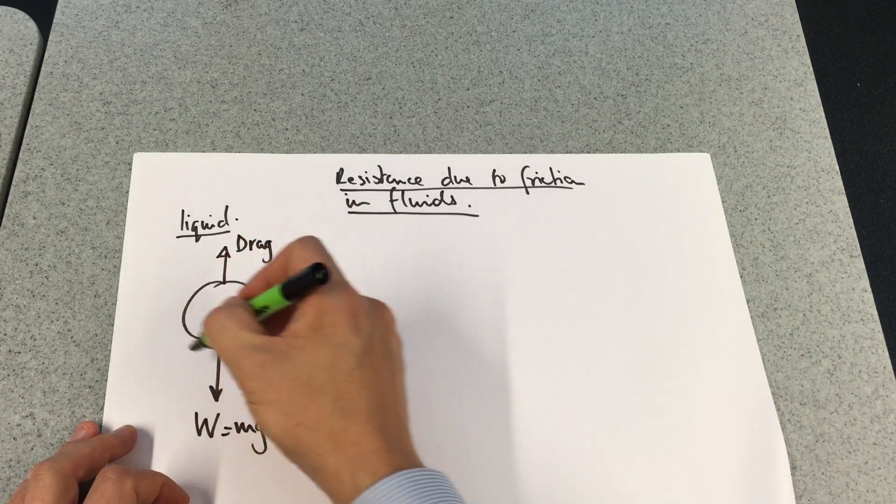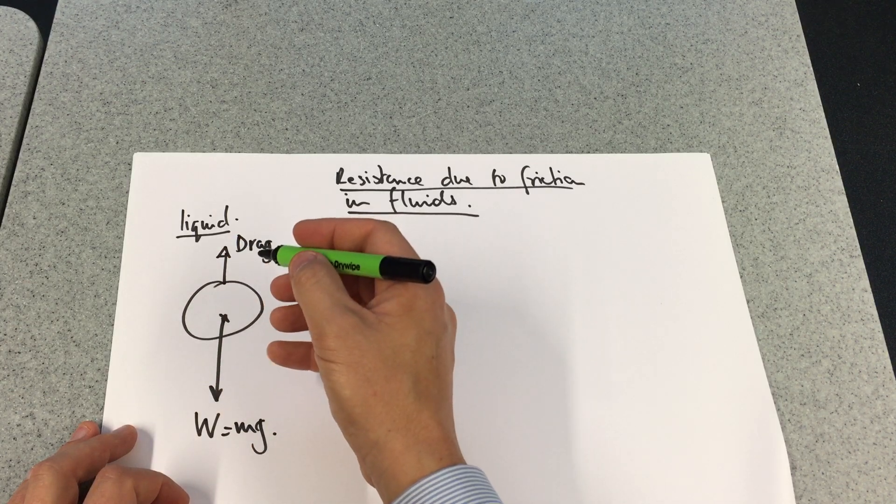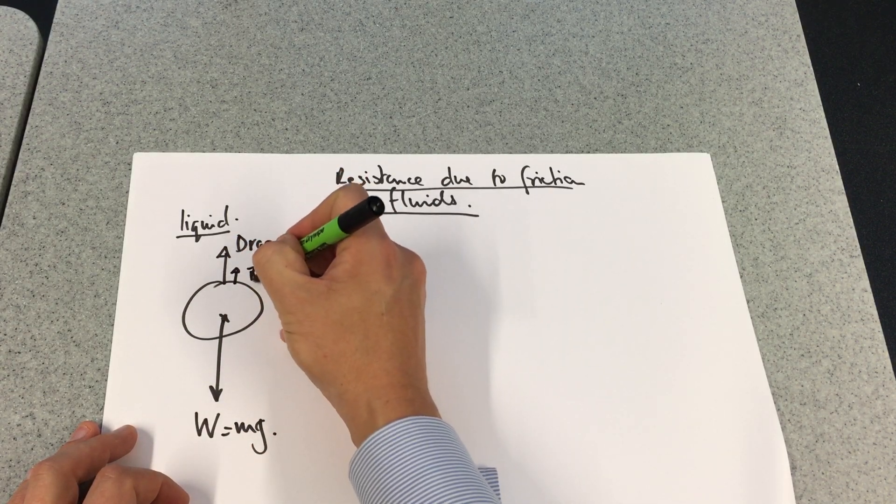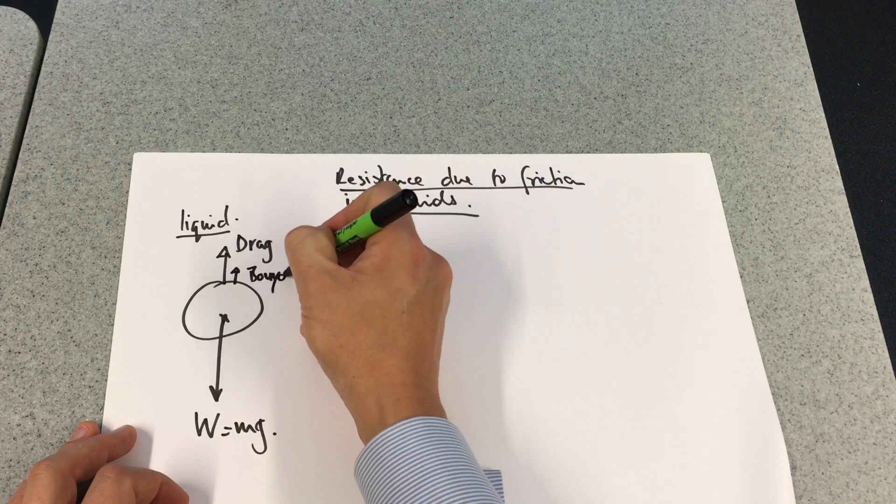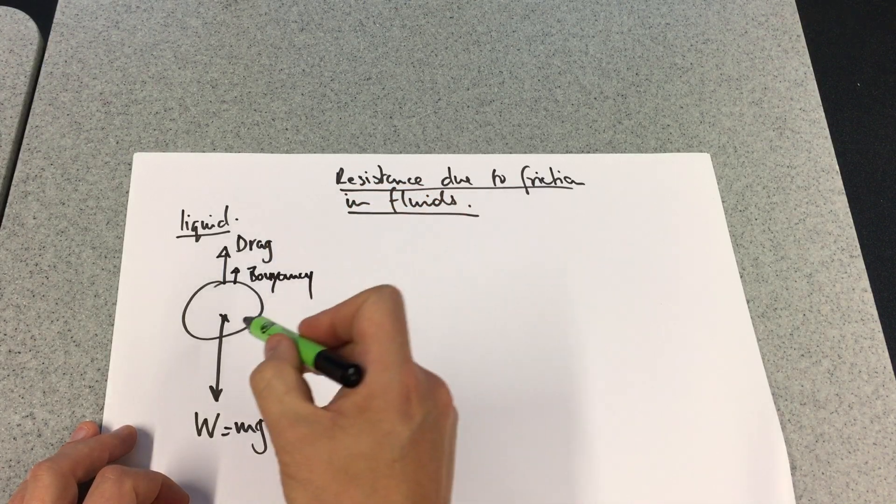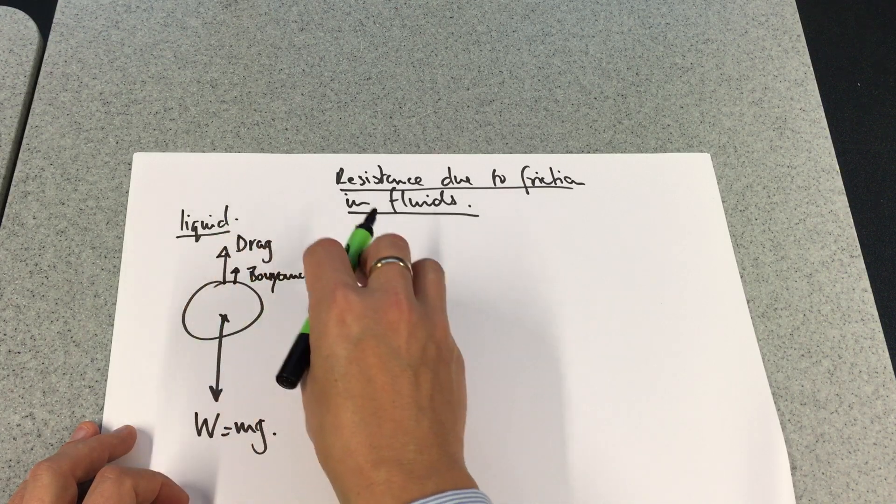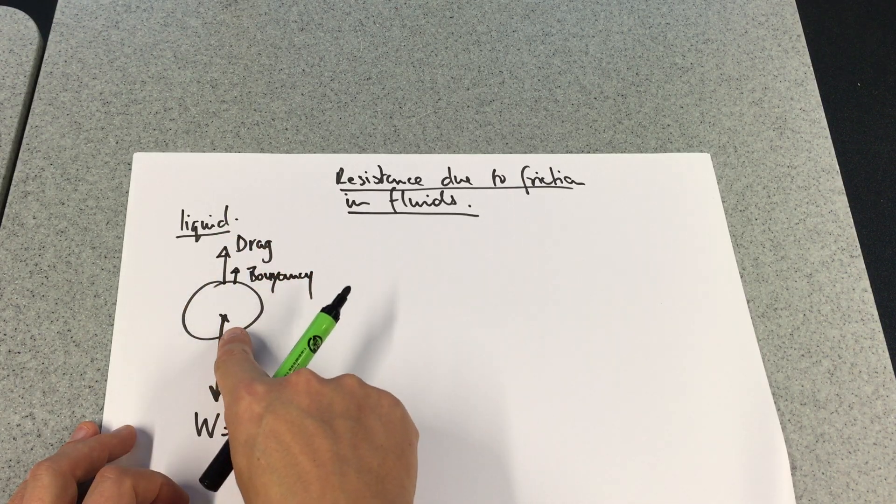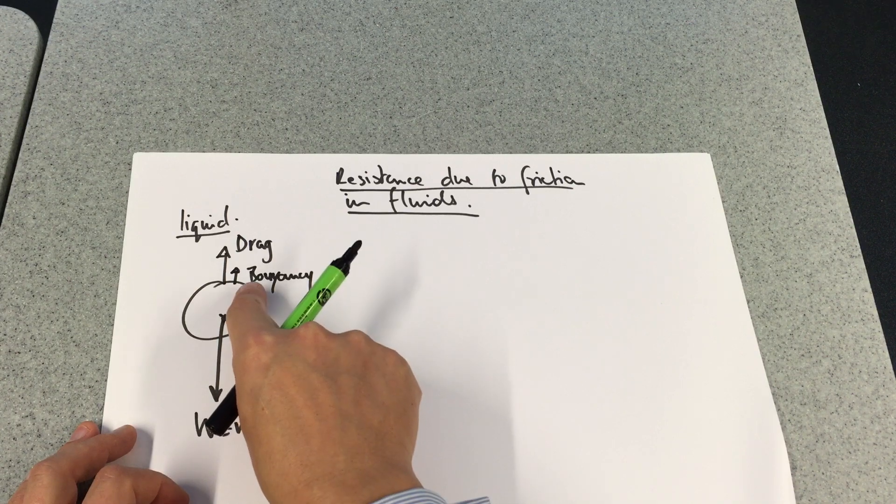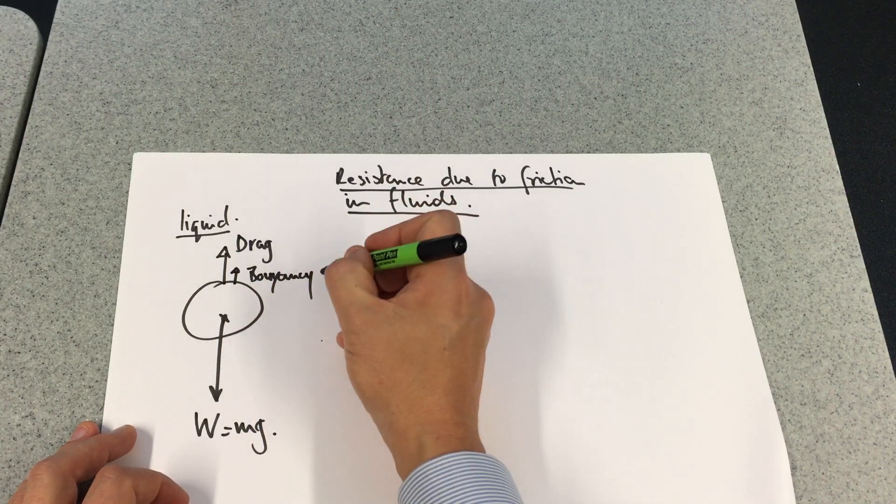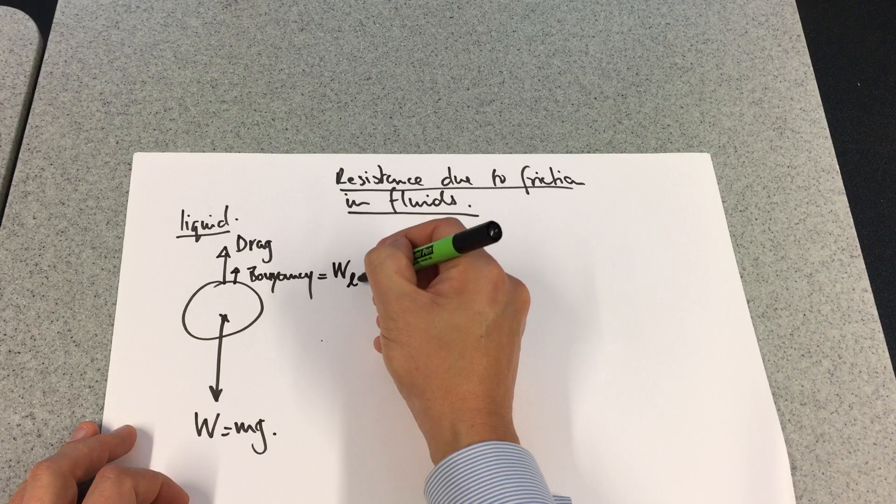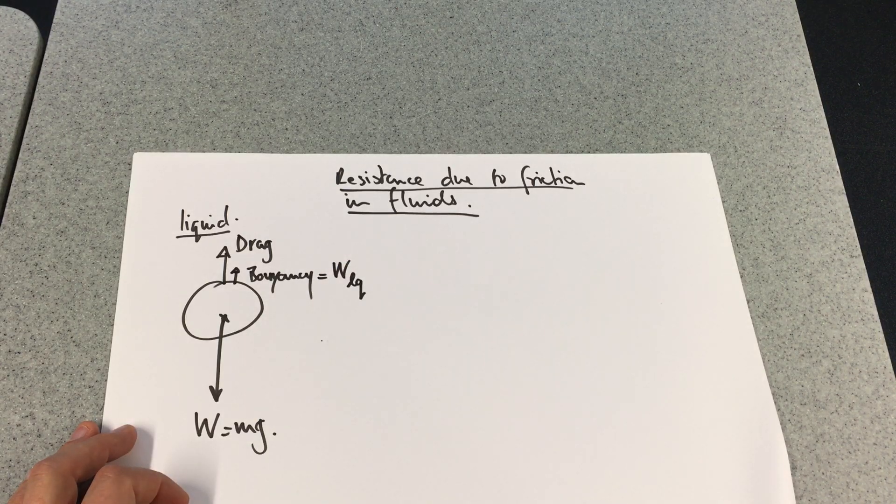Also, if this liquid is fairly viscous and quite heavy, there's also going to be a buoyancy force. In other words, the volume of liquid that it's displaced is going to equal an upthrust on this object, hence its buoyancy. So it's going to be equal to the weight of the liquid which it has displaced.